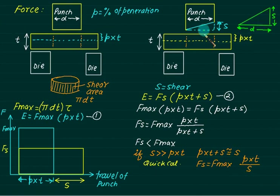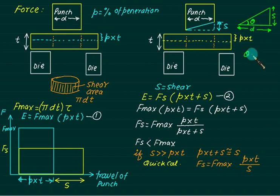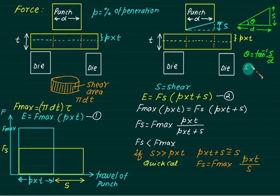Enlarging the figure, the vertical dimension is S and the horizontal is d (diameter of the punch). The shear angle θ = tan⁻¹(S/d). θ is called the shear angle.